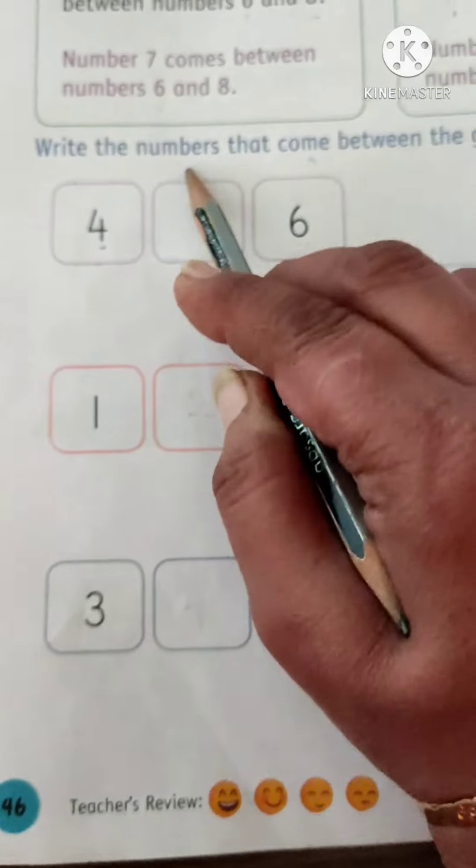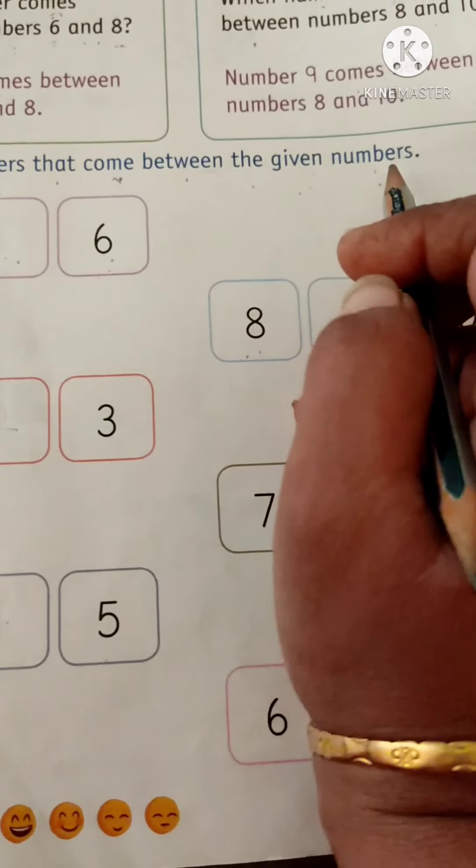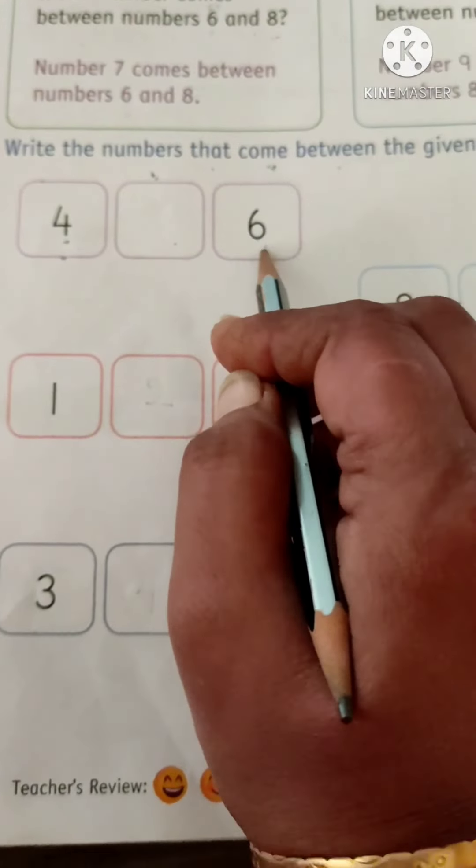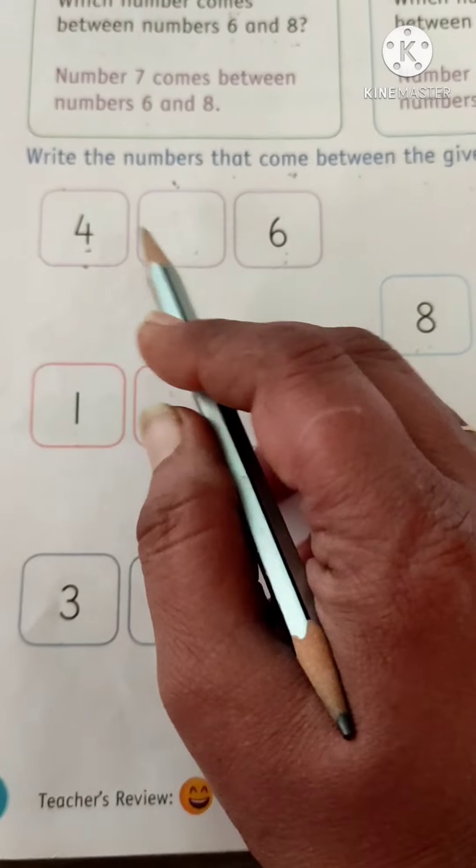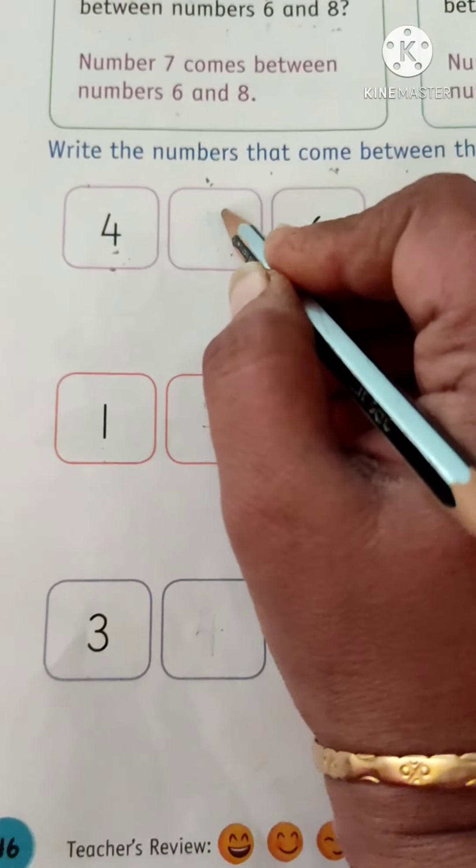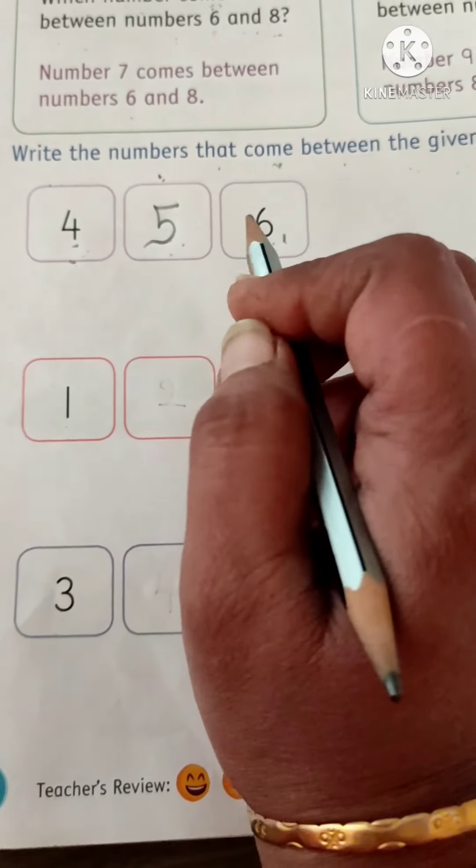Our next exercise. Write the numbers that come between the given numbers. See, this is 4, and this is 6. Which number comes between 4 and 6? 5. Right? So we can say 4, 5, 6.